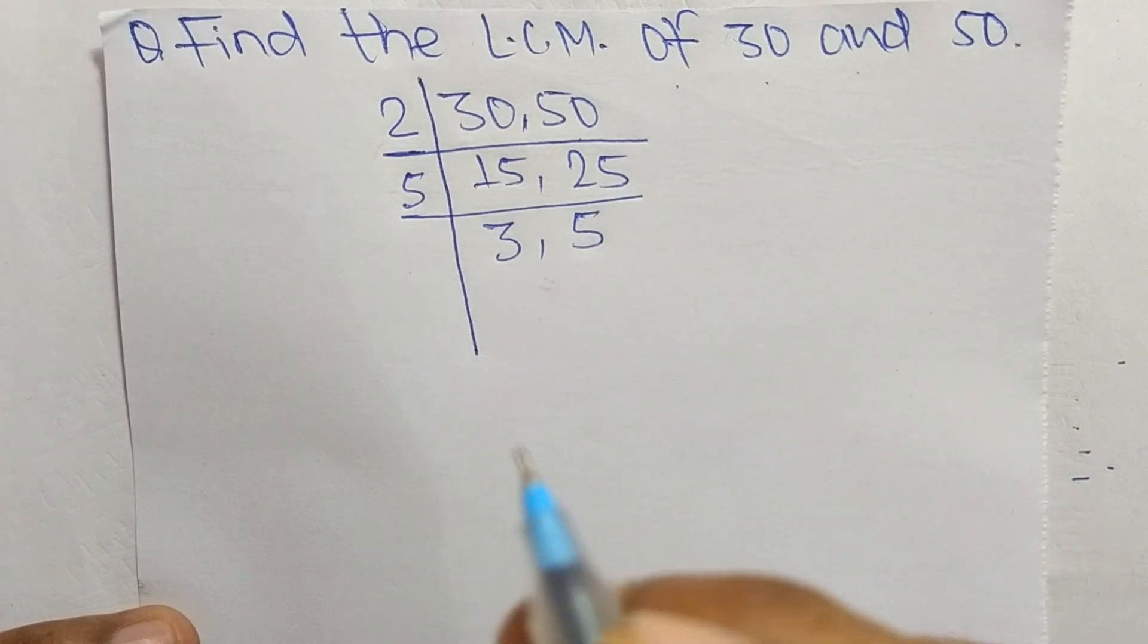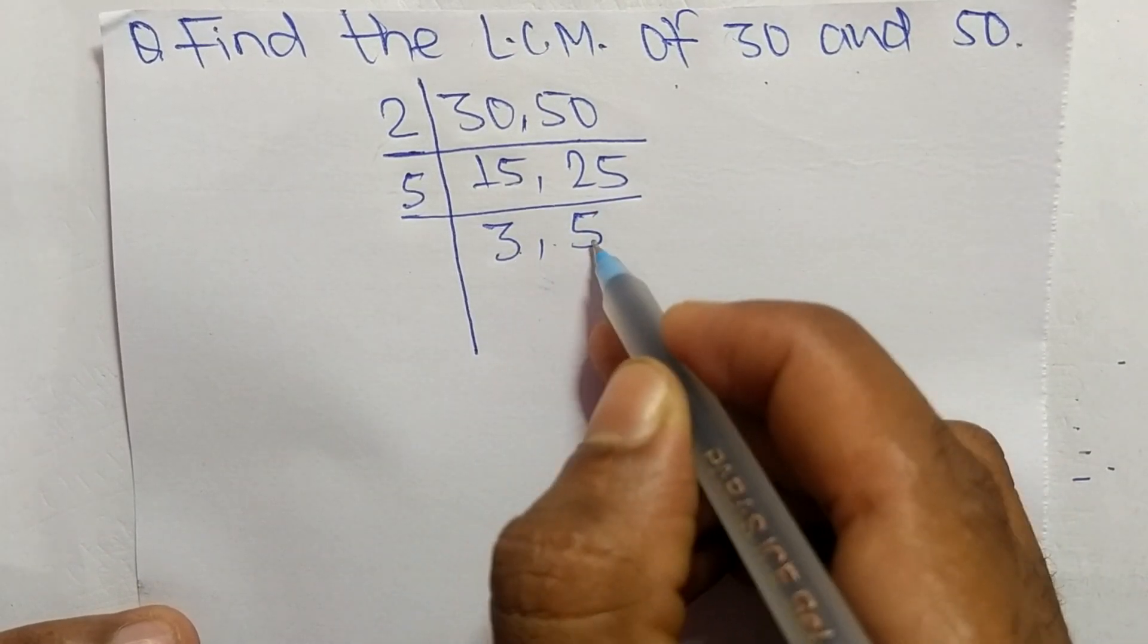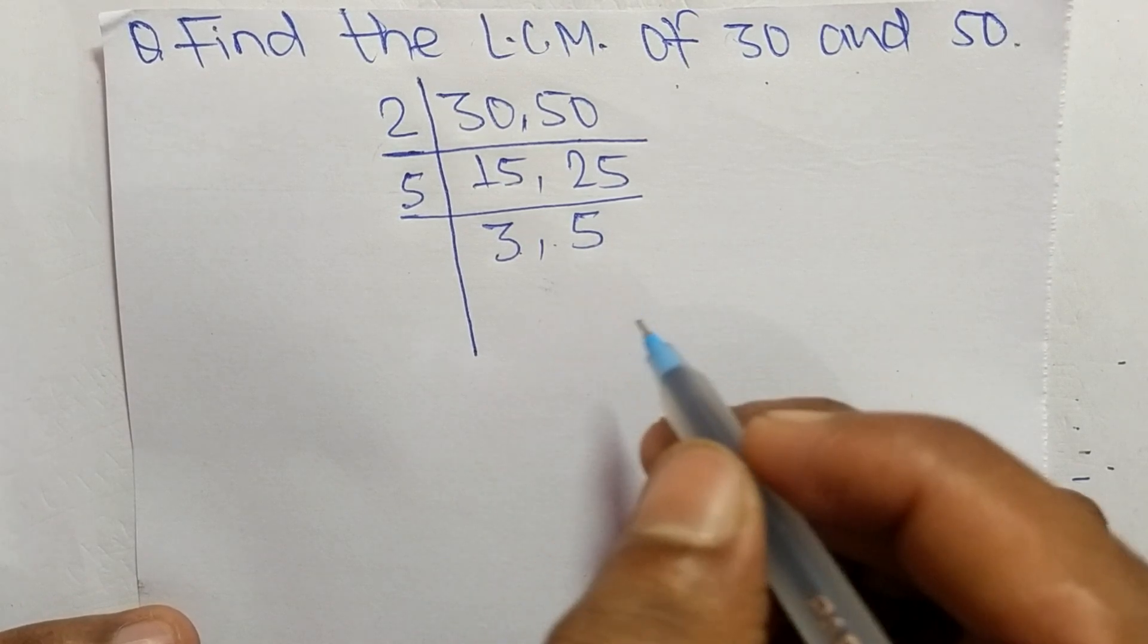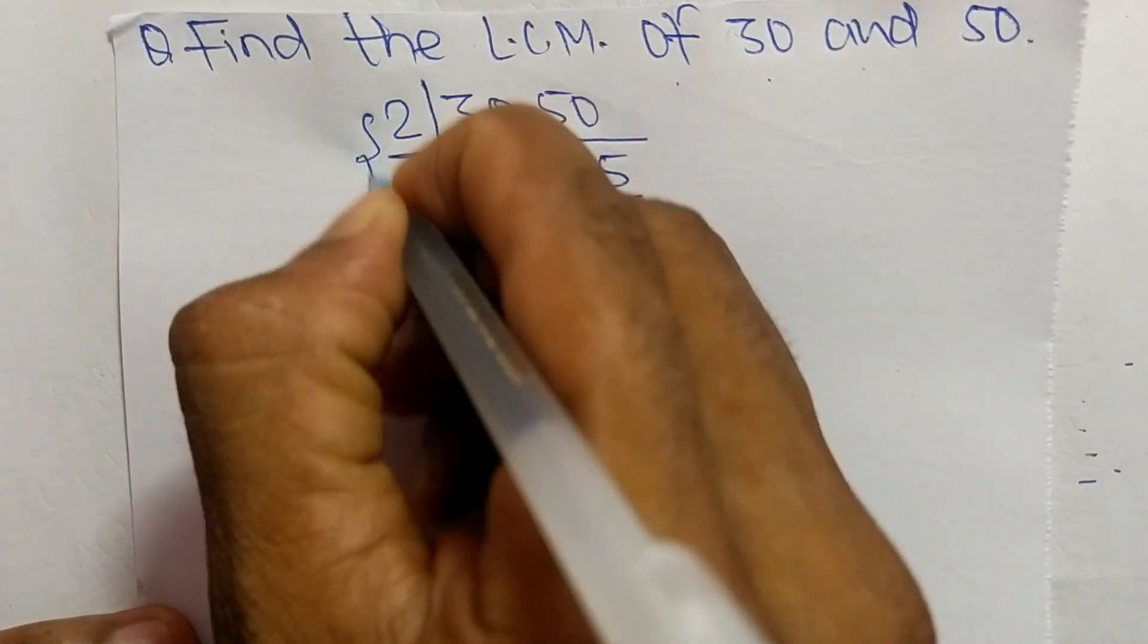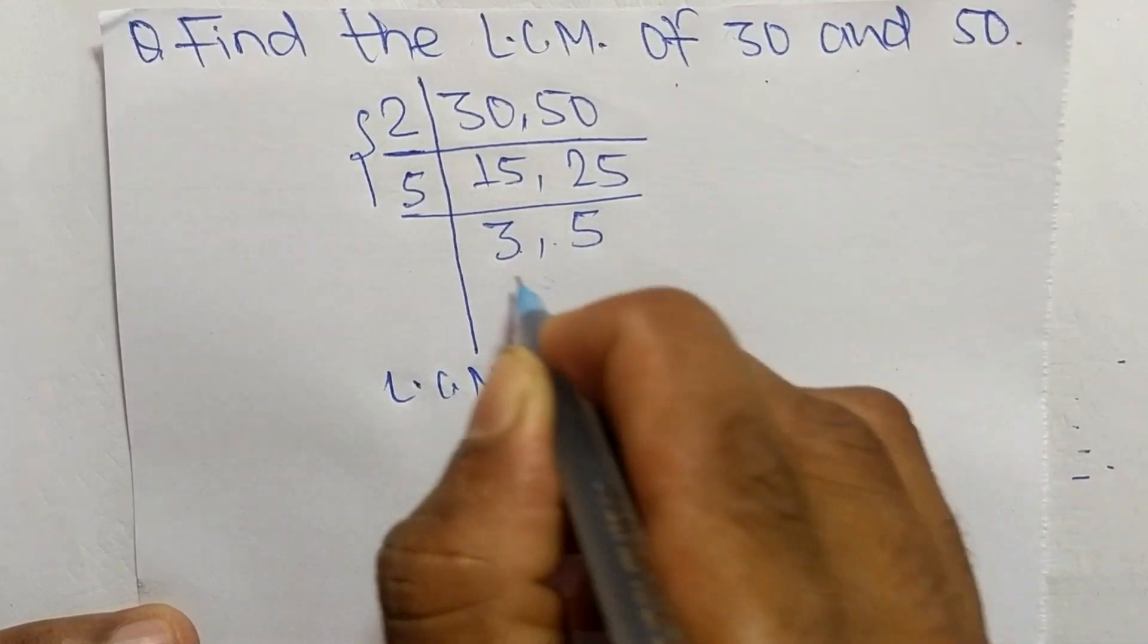So at last we have here 3 and 5 which are not exactly divisible by the same number. So the LCM is equal to, from this part it is 2 times 5, and from this part it is 3 times 5.